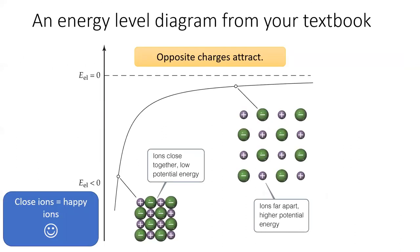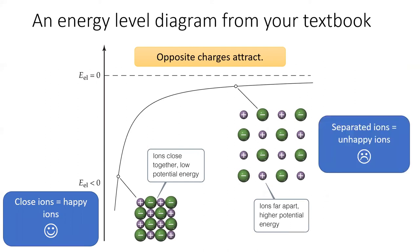Here's another energy diagram. This one's from your textbook. It shows an ionic compound. Positive and negative charges attract. So when ions are spread apart from each other, they contain a high amount of potential energy. Notice that in this diagram, the point where energy equals zero is up near the top. This might seem kind of strange, but the zero point is placed more or less arbitrarily.